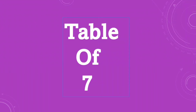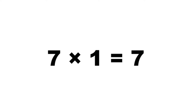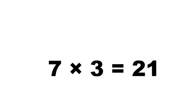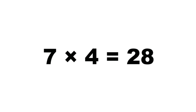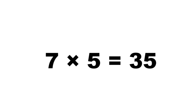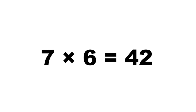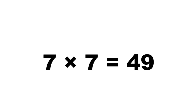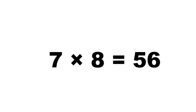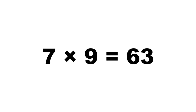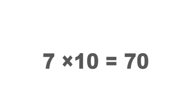Table of seven. Seven ones are seven, seven twos are fourteen, seven threes are twenty-one, seven fours are twenty-eight, seven fives are thirty-five, seven sixes are forty-two, seven sevens are forty-nine, seven eights are fifty-six, seven nines are sixty-three, seven tens are seventy.